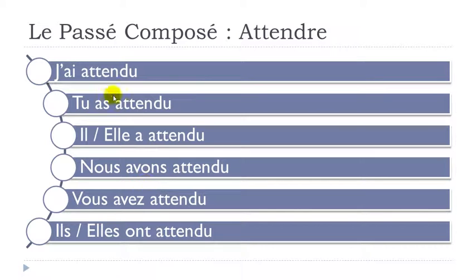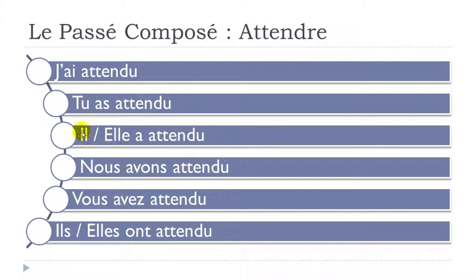When I introduced the passé composé form, I told you that most verbs use the verb avoir at the present form and then the participe passé. In that case, attendre becomes attendu at the participe passé, and that's the form you add at the end — it doesn't change, as you can see. J'ai attendu. Tu as attendu. Il a attendu. Elle a attendu.